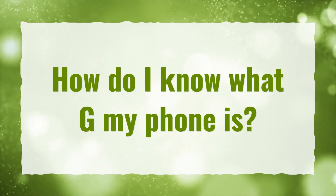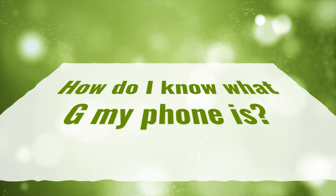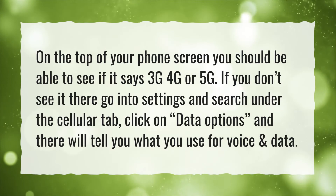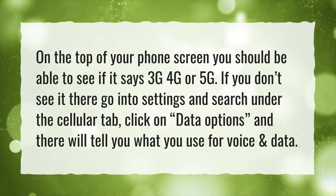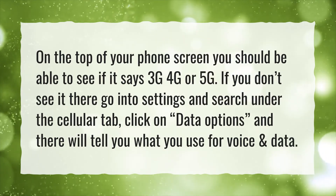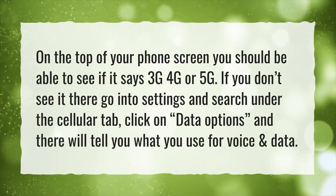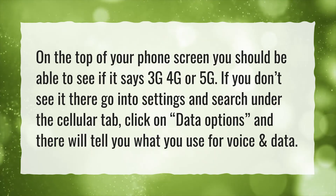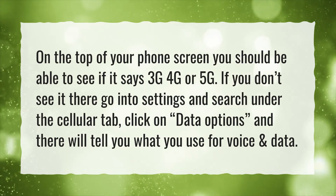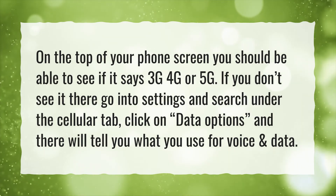How do I know what G my phone is? On the top of your phone screen you should be able to see if it says 3G, 4G, or 5G. If you don't see it there, go into Settings and search under the Cellular tab, click on Data Options, and there it will tell you what you use for voice and data.